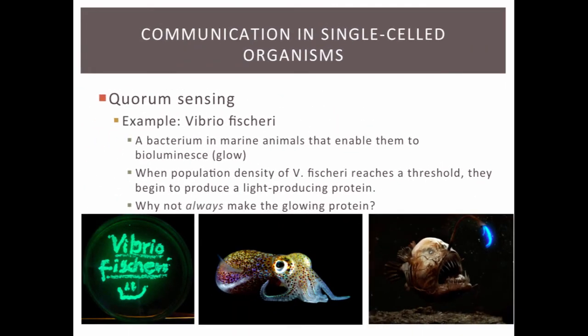A specific example is the bacterium Vibrio fischeri, which lives in marine animals and enables them to bioluminesce or glow. When the population density reaches a particular threshold, the high autoinducer concentration activates a gene for a light-producing protein known as green fluorescent protein. The bacteria only turn on the glowing gene when many bacteria are present. It's not efficient for one bacterium to glow — bacteria are small, so one glowing bacterium has little effect. But many bacteria glowing at once makes the effort worthwhile.